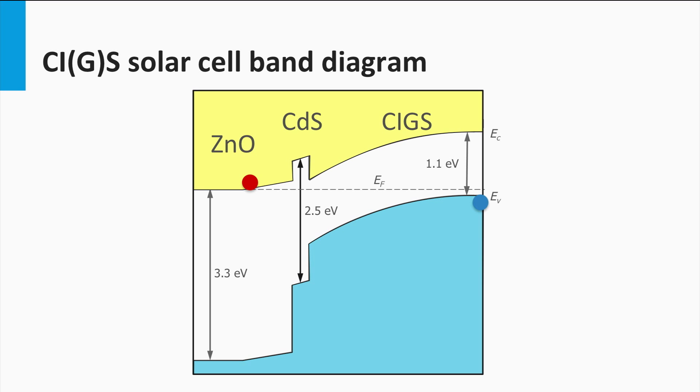The electrons have to be separated at the CIGS-cadmium sulfide interface. As with every interface, this interface has more defects and could act as a loss mechanism to the minority electrons.